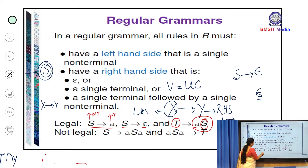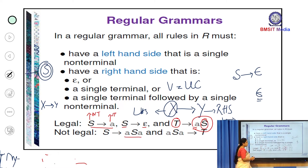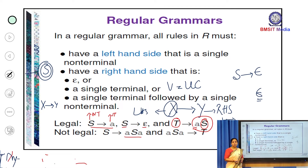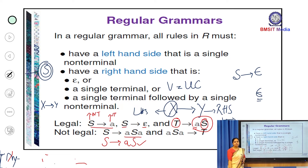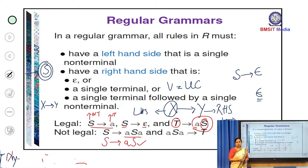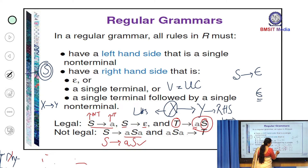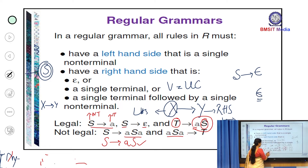Some productions are not legitimate. S → ASA is invalid because the RHS has a terminal followed by a non-terminal and then another terminal, which is not allowed. Also, ASA → T is invalid because the LHS has a combination of terminal and non-terminal rather than exactly one non-terminal. In the first case the RHS is invalid; in the second case the LHS is invalid.